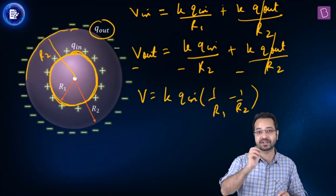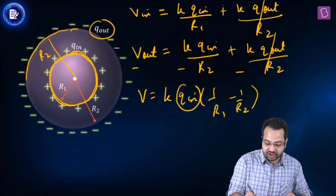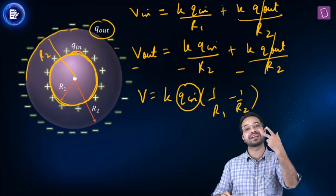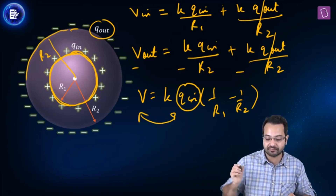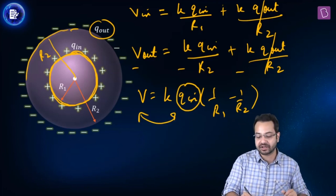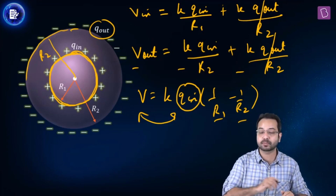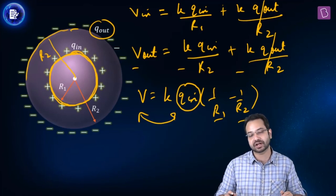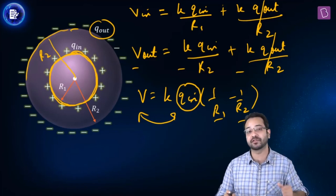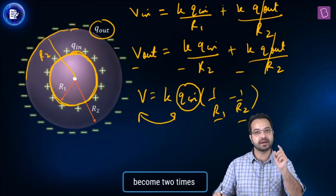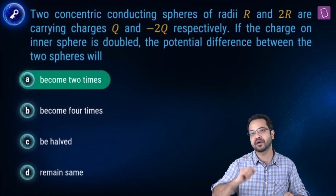This is a very important result to remember. Now what we are doing is making the charge on the inner shell twice. We can see very clearly that if the radius of the spheres is kept constant, then the potential is proportional to the charge inside and does not depend on the charge outside. So if Q_in is doubled, then the potential difference is obviously going to be doubled. So option A is the right answer.